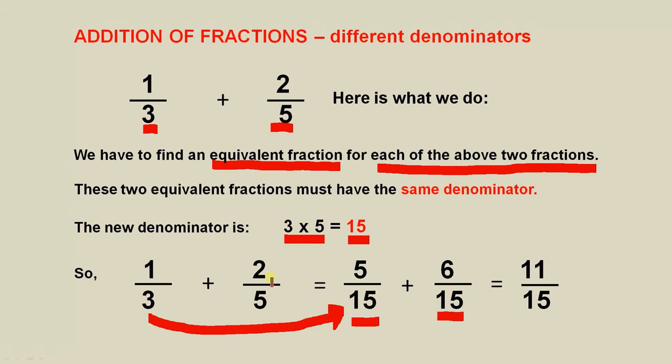Now we do the same thing with 2 over 5. Now we have already worked out that the denominator is 15. How did we get from the 5 to the 15? We multiplied 5 by 3. 3 times this 5 gives you 15. So 3 times 2 gives you 6. So we have 2 over 5 and the equivalent fraction is 6 over 15. Notice the two denominators are the same.